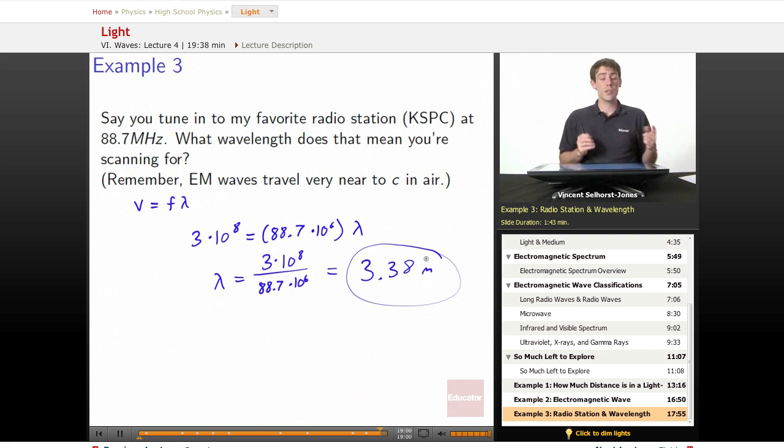That's pretty big. It's really interesting to compare how much difference there was between the wavelength of that green light, tiny, tiny thing, 525 nanometers, to 3.38 meters. That's practically two of me standing on my shoulders. So that's a really tall wavelength.